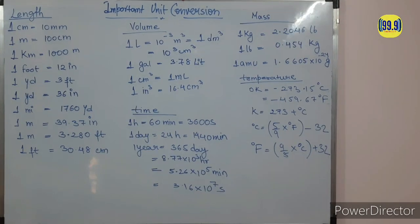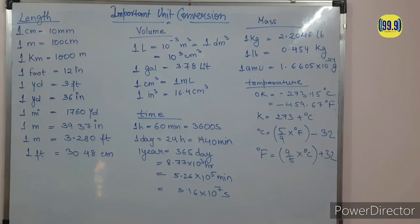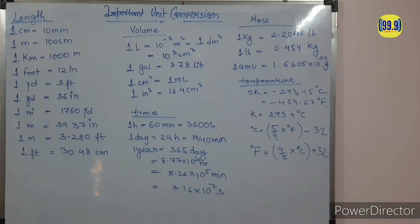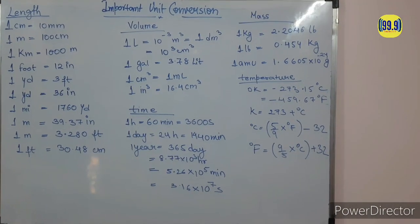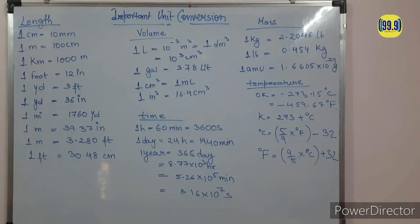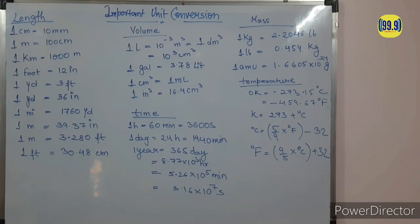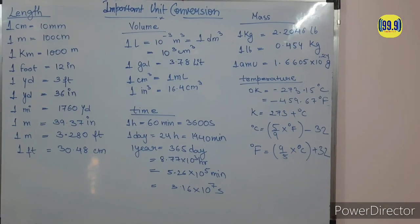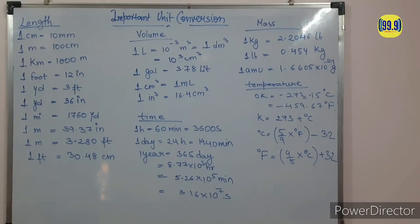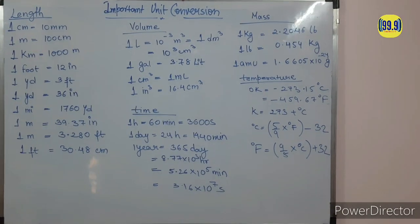Volume units include liter, meter cube, decimeter cube, and centimeter cube — all are units of volume. Now come to the time unit. 1 hour is equal to 60 minutes and is equal to 3600 seconds. 1 day is equal to 24 hours, which is equal to 1440 minutes. 1 year is equal to 365 days, which is equal to 8.77 × 10³ hours, and also equal to 5.25 × 10⁵ minutes.